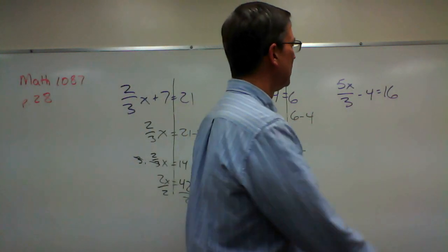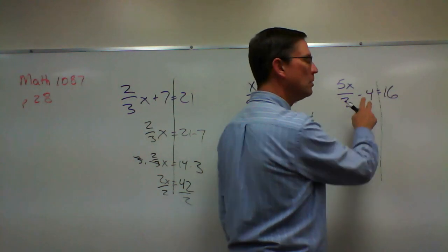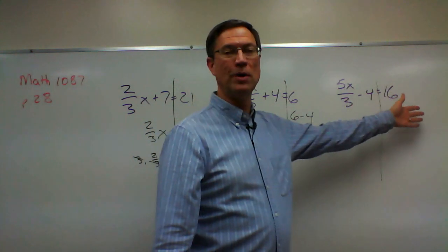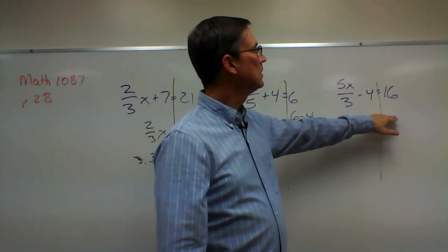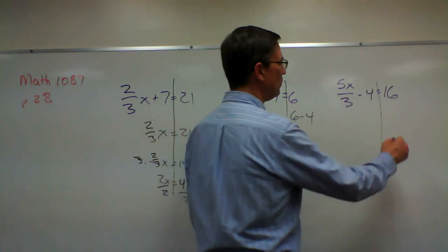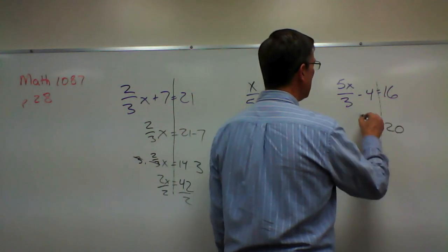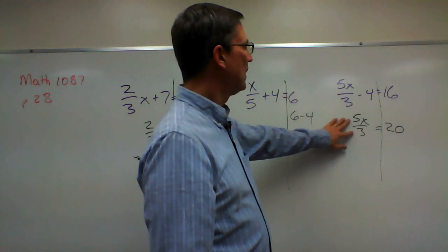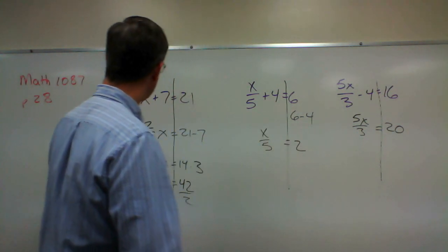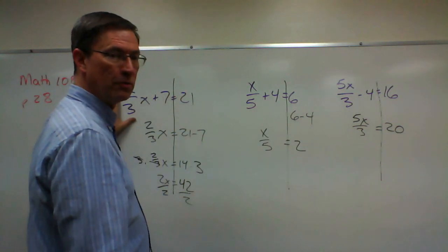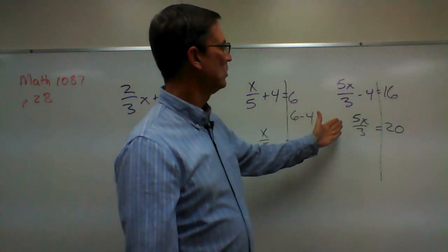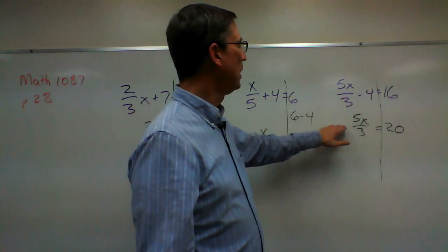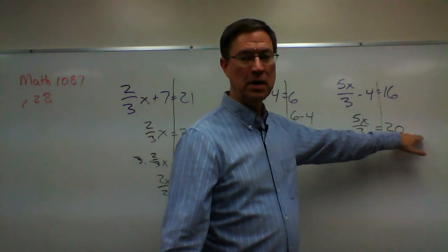Let's look at the last one. Again we're going to undo the subtraction, but because this is subtraction, when I undo it I'm adding 4 to the other side. So now I have 16 plus 4, which I'll write as 20, and then we have 5X over 3. If it doesn't seem as obvious — just like 2/3 X is a fraction times X — 5X over 3 is the same as 5/3 X. We solve it the same way: multiply both sides by 3 first.